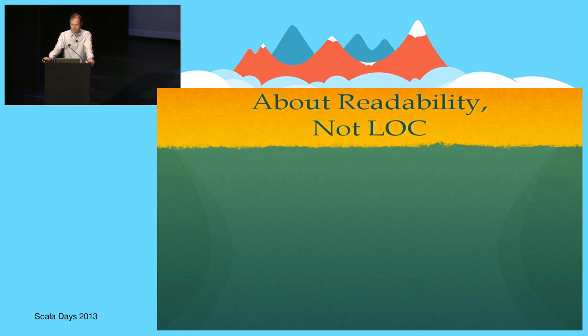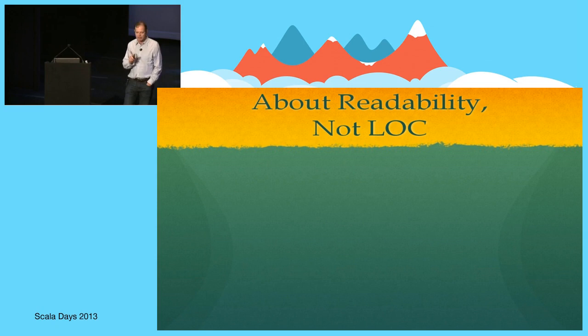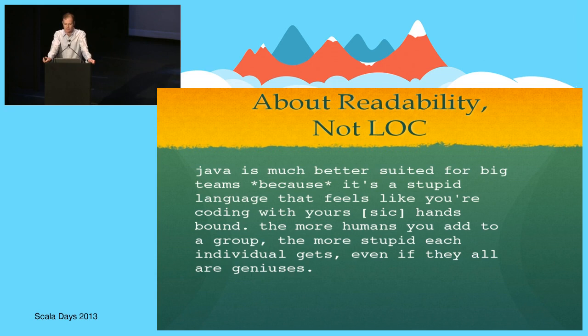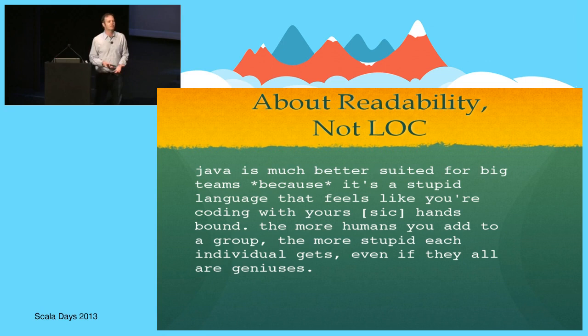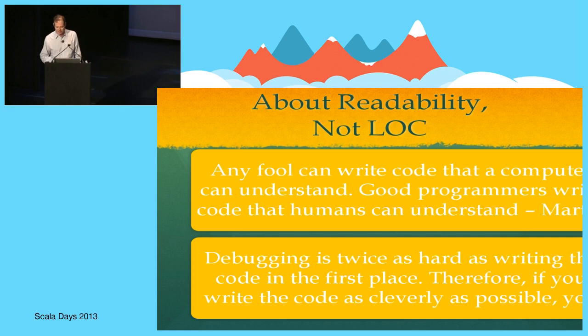I'm going to quote from some things on the Scala mailing lists. I'm not saying these are representative, but some of these sentiments occur more often than they should. Here's a quote: 'Java is much better suited for big teams because it's a stupid language that feels like you're coding with your hands bound. The more humans you add to a group, the more stupid each individual gets, even if they are all geniuses.' Essentially: you don't need to worry about understandability because you're screwed as soon as you have a lot of people looking at any piece of code anyway, so don't even try.